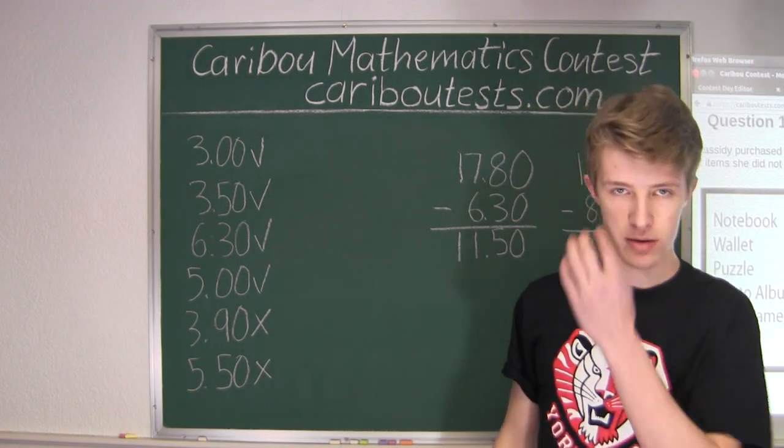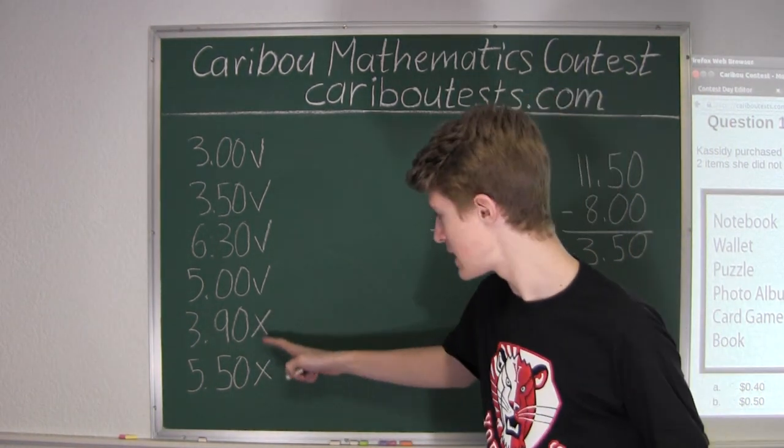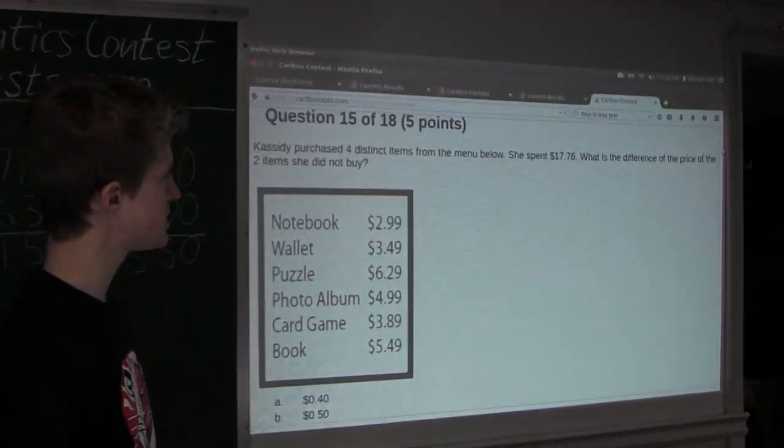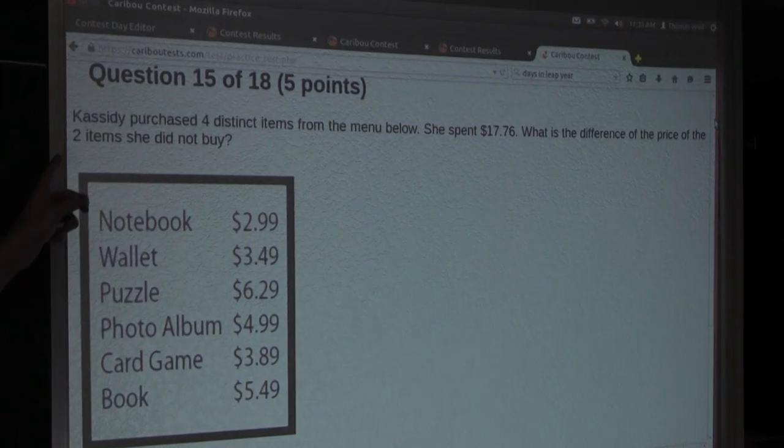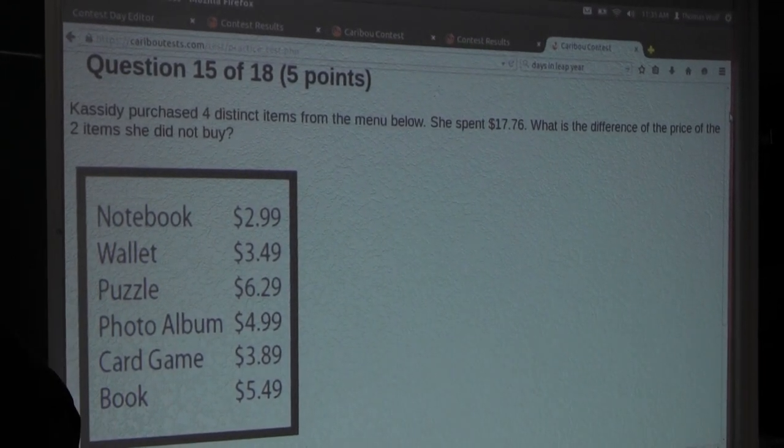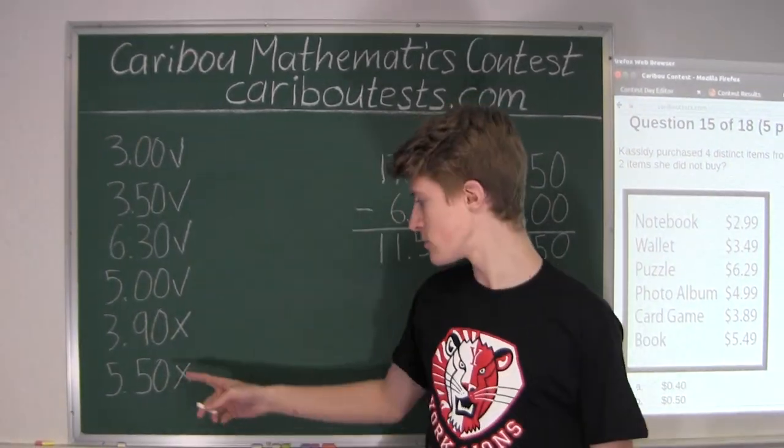So, now we know the items that she purchased, and most importantly, the ones that she did not. The question asks, what is the difference of the price of the two items she did not buy? So, here are the two items that she did not buy. She did not buy the book for $5.50, and she did not buy the card game for $3.90.